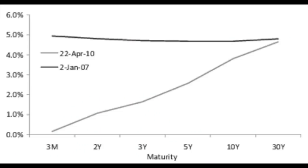The yield curve can be flat, inverted, or steep. The gray line here is a steep yield curve, which is usually the curve at the beginning of an economic cycle. Then the curve flattens, and that's usually the curve at the end of an economic cycle. In this case the gray line is April 2010 and the flat line is January 2007.